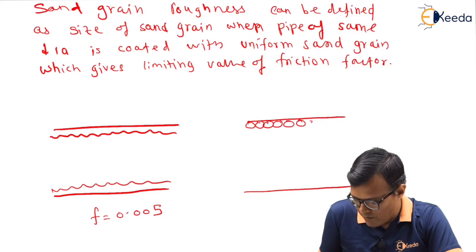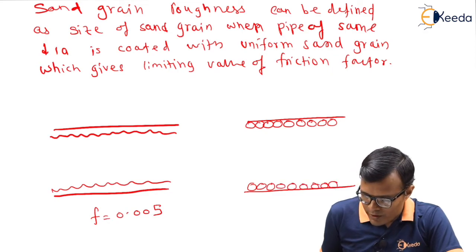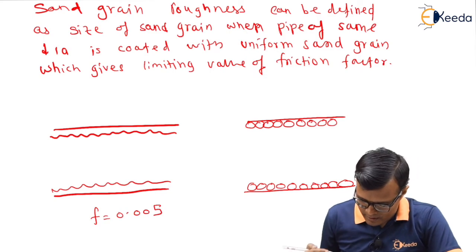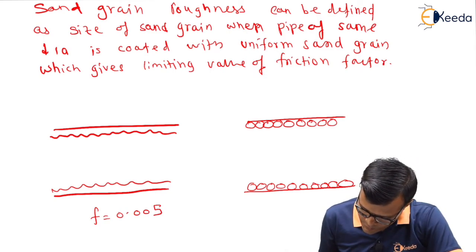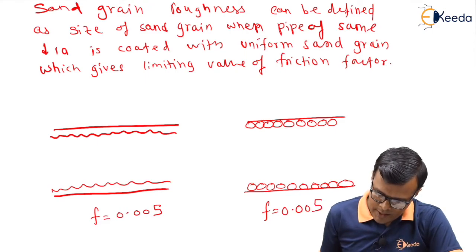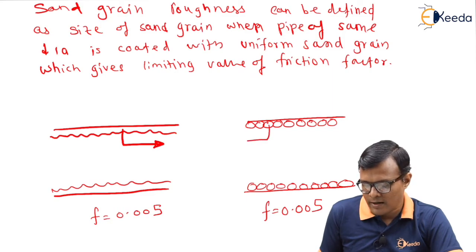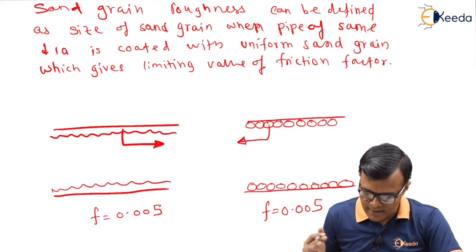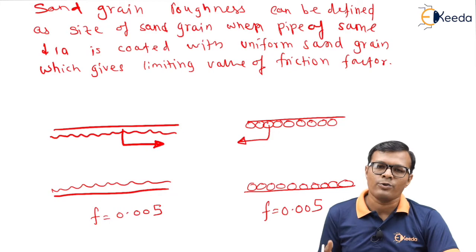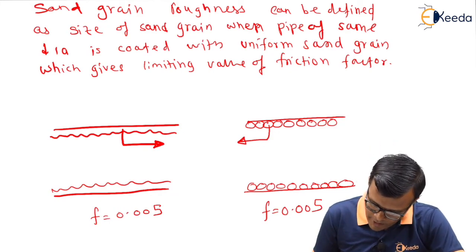So sand grain roughness is that size of sand which, if coated - say for example, if this is the coating of sand particles - the pipe if gives value equal to 0.005, then to explain the term roughness we use the term sand grain size. So this is the term equivalent to original pipe's friction factor. So limiting value of friction factor.